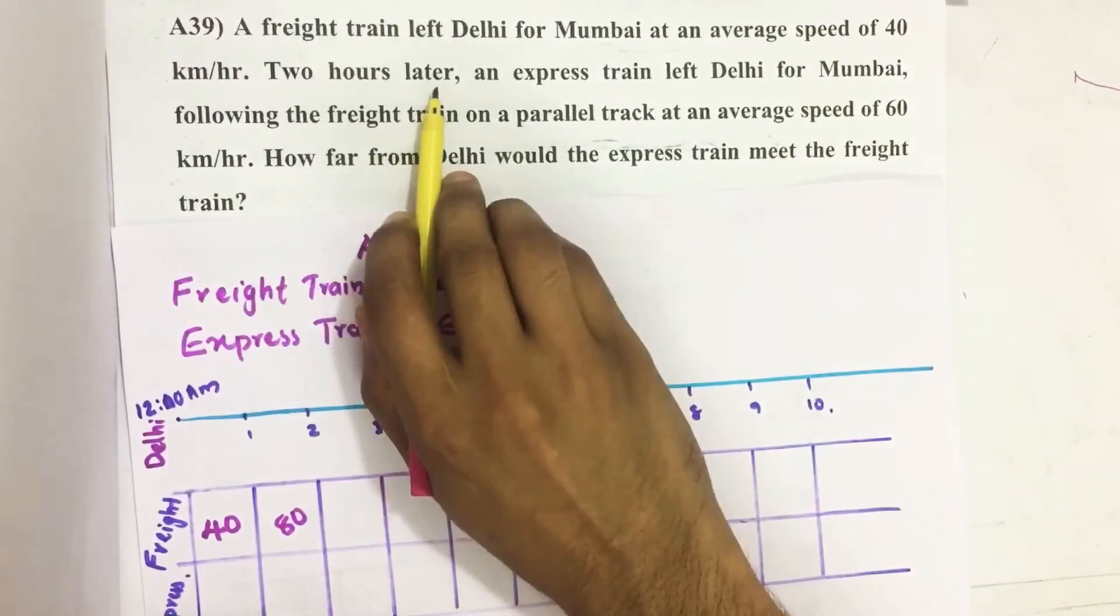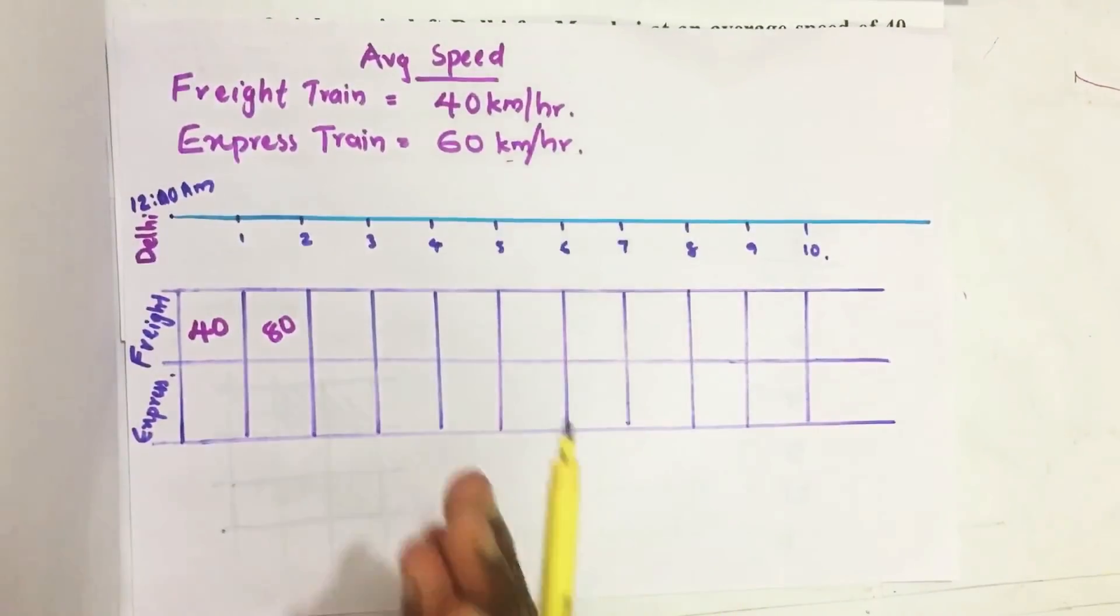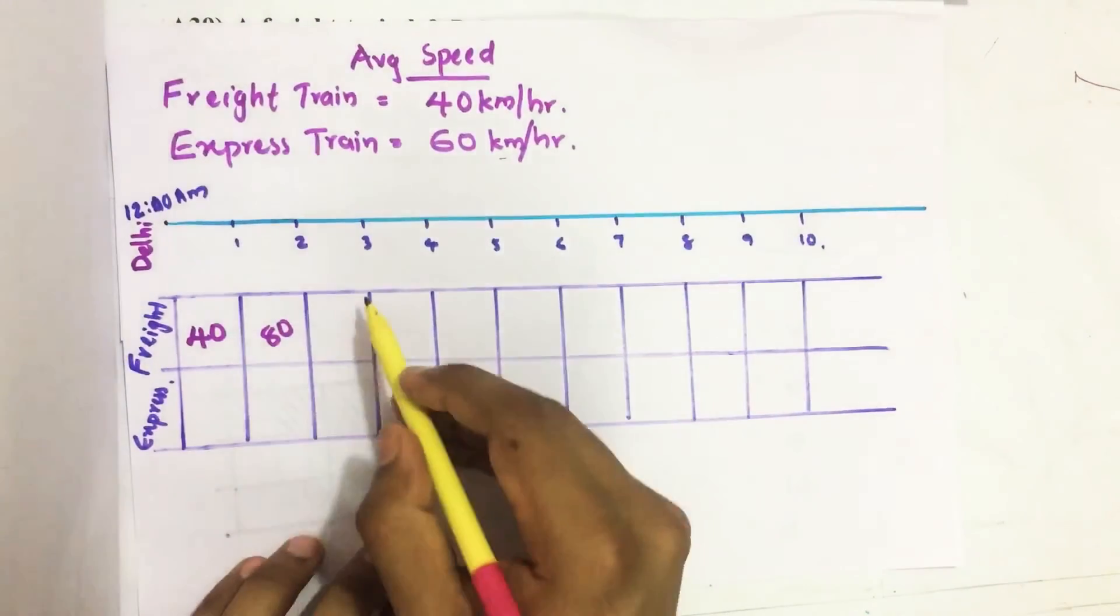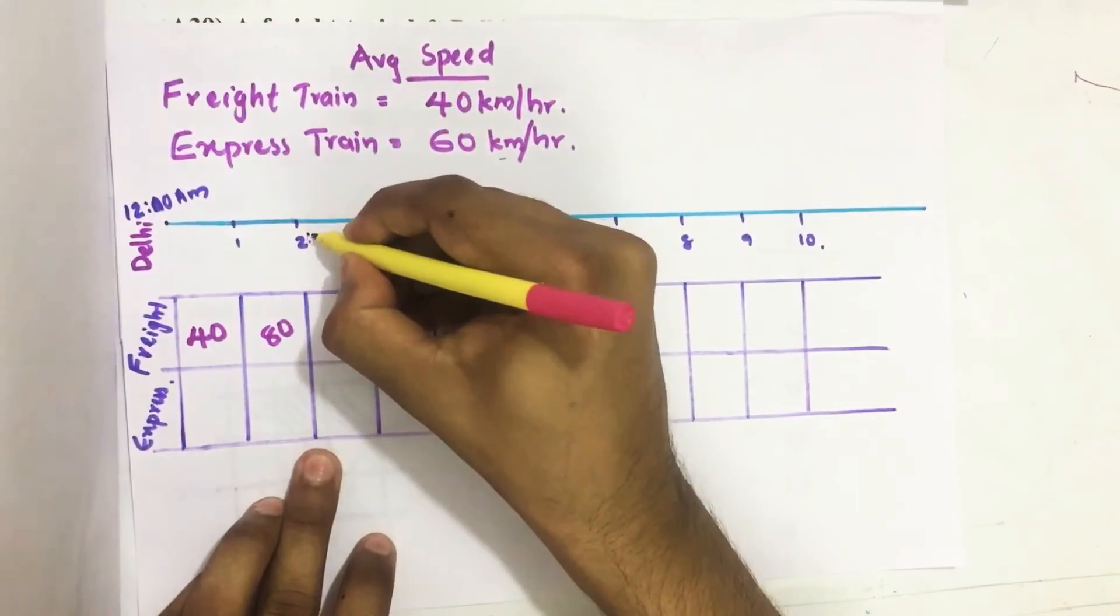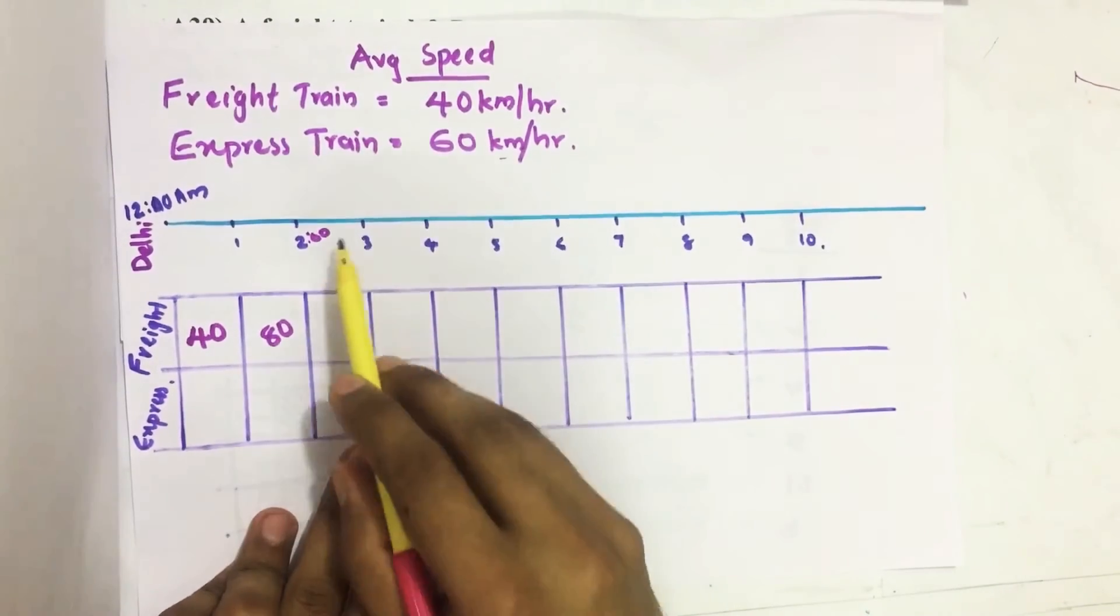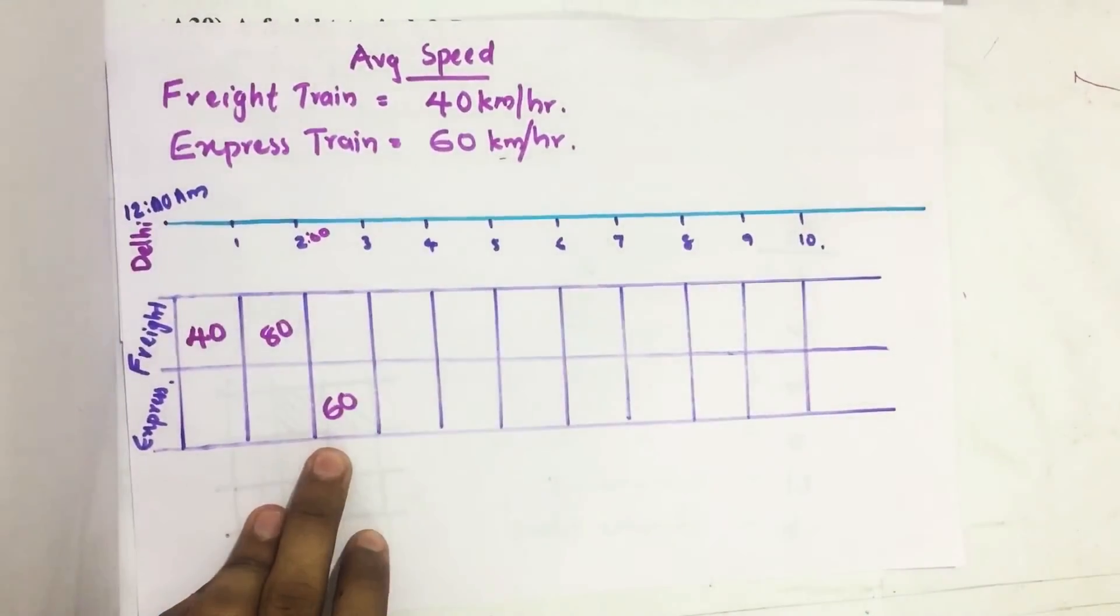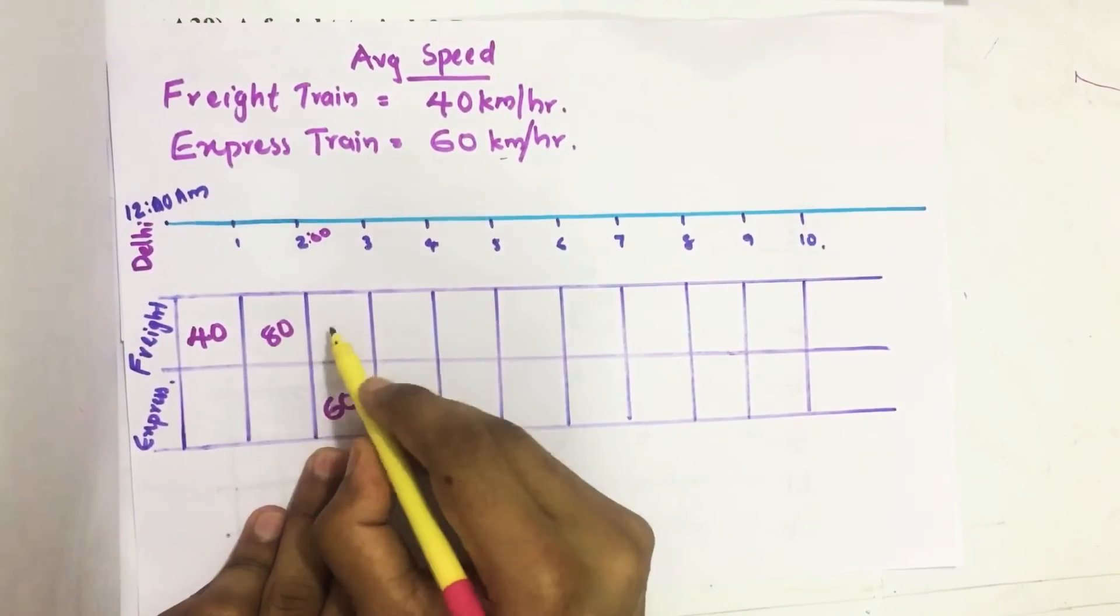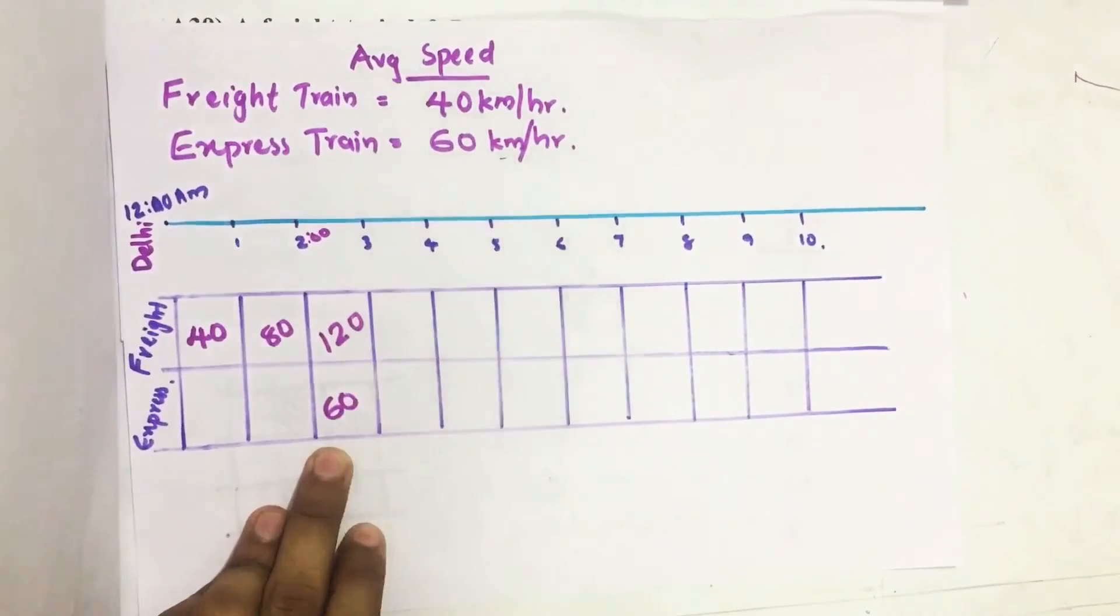After two hours, the express train starts. It starts at 2 o'clock. After one hour it travels 60 km. By that time, the freight train has traveled 40 more km, reaching 120 km.